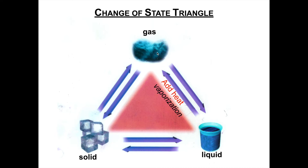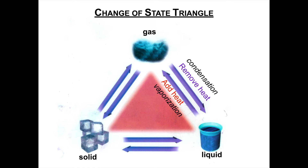Let's continue with our triangle to understand the different changes of state. If we go from a gas to a liquid, do you remember what that change of state is called? It is called condensation. You do have to memorize the names of the changes of state — vaporization or condensation — but you don't have to memorize whether heat is added or removed as long as you understand what's happening to the particles. The particles of a gas are farther apart and move faster than those of a liquid, so we remove heat because the particles in a liquid are getting closer together and moving more slowly.